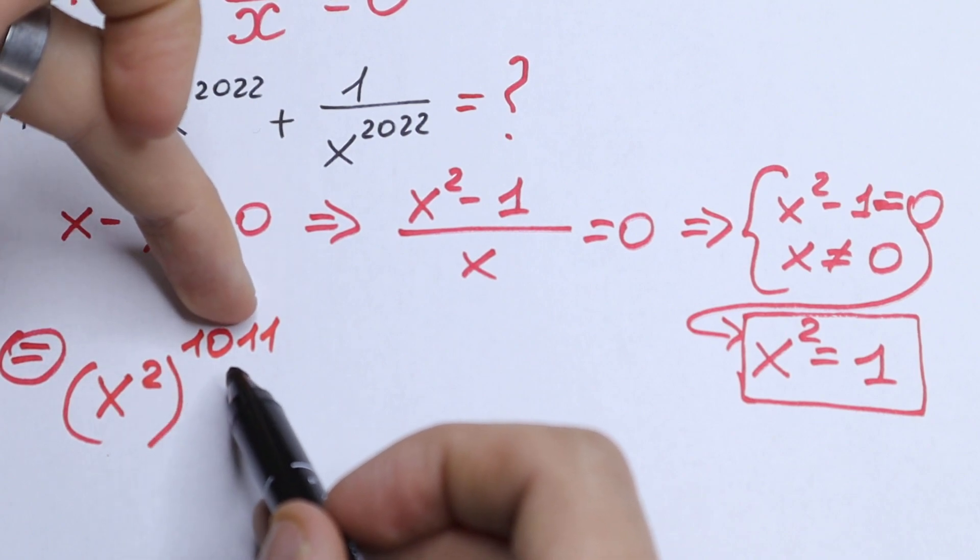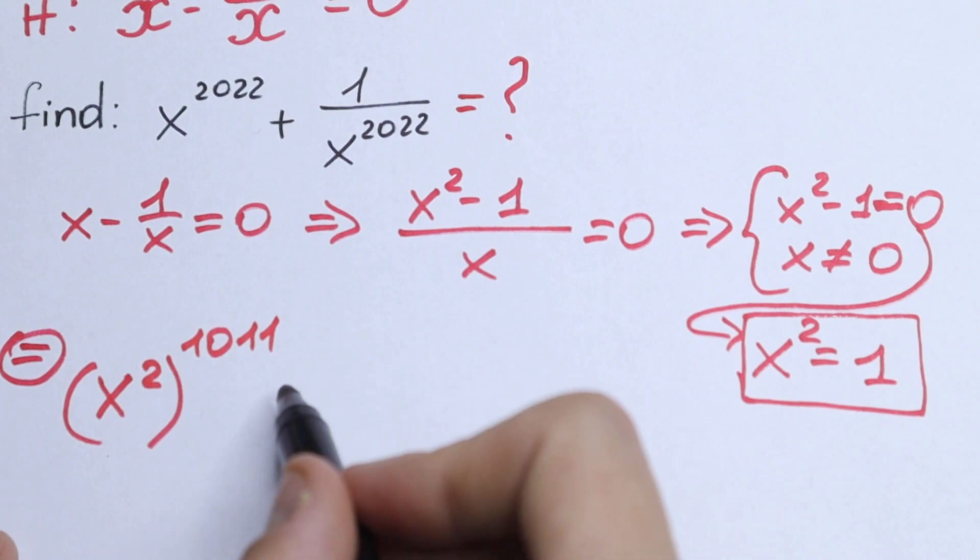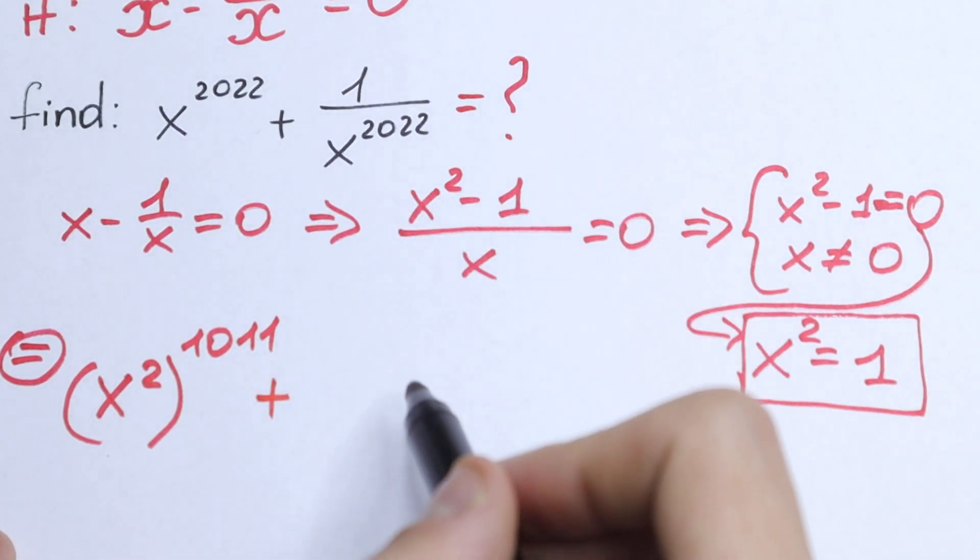And if we raise this to the power 1011, this square to the power 1011, we will have the same as right here. So nothing changed.